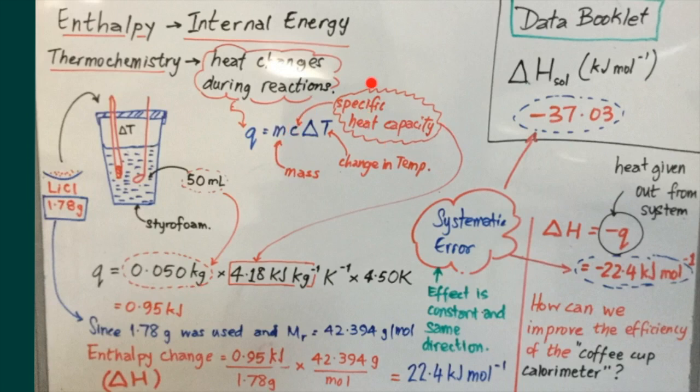The specific heat capacity of water given here is 4.18 kilojoules per kilogram per Kelvin, multiplied by the change in temperature given in Kelvin to match the Kelvin unit here in the specific heat capacity. Here we see the change was 4.5 Kelvin. Taking the product of these three values, the answer comes to 0.95 kilojoules.